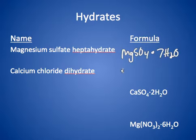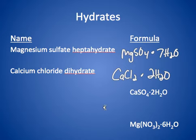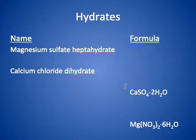Here we have calcium chloride. Calcium is +2, chloride is -1, so it's CaCl2. The di- prefix means there are two water molecules embedded, giving CaCl2·2H2O. We also have calcium sulfate dihydrate and magnesium nitrate hexahydrate. Many ionic compounds can absorb water into their structure — not all, but many can. The ones that can are called hydrates. When they have the waters, they're hydrated; when they do not, they're called anhydrous.